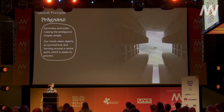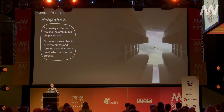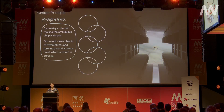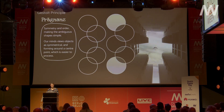Pregnance — it's German, so I won't pronounce it correctly. Our brains prefer things that are simple, clear, and in order — less time to process, which means fewer dangerous surprises and threats. Our minds like symmetry and shapes forming around a center point, which is easier to process. When confronted with complex shapes, we tend to reorganize them into simpler components. The Olympic logo is a good example: instead of seeing complex interlocking shapes, we see five circles, either connected or on top of each other. Pregnance is not only symmetry and order — it's simplicity.